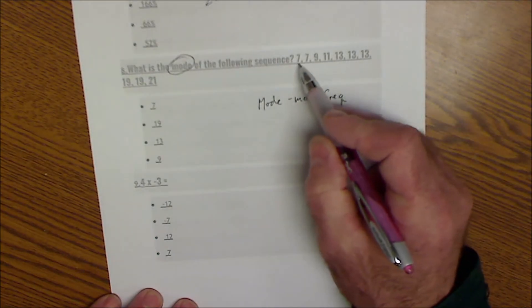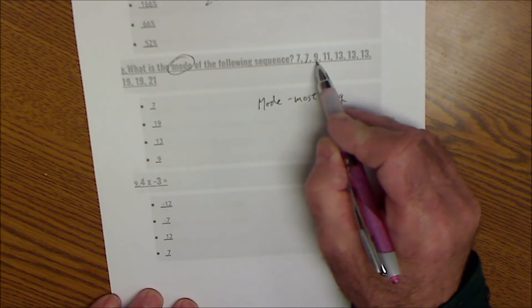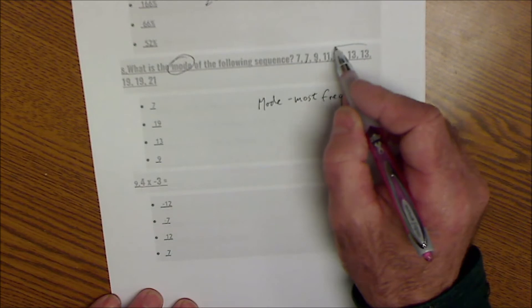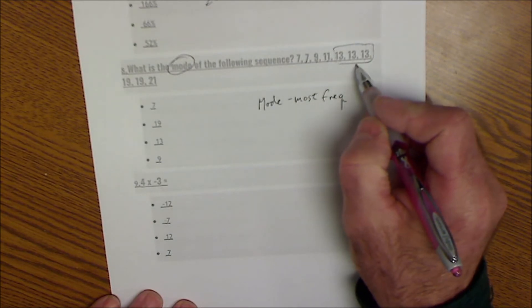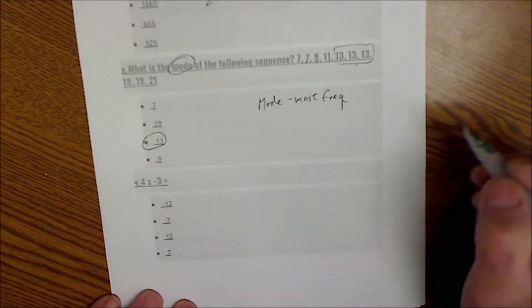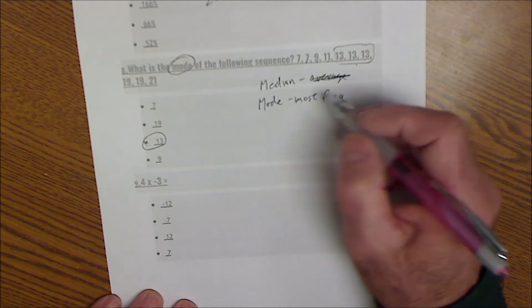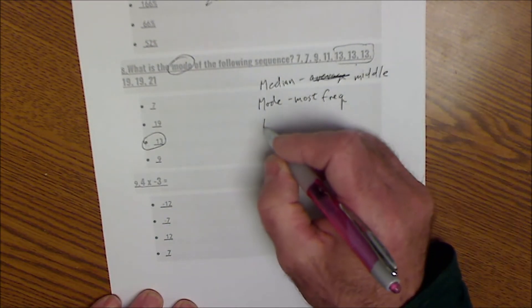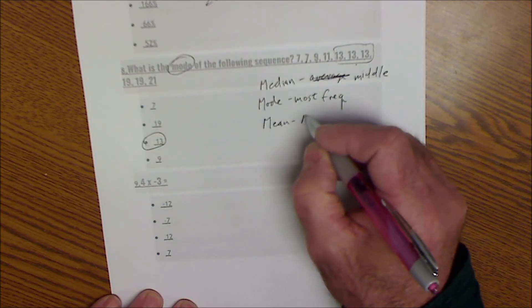Mode means the most frequently used number. So the most frequent, I have one, two values of 7, one value of 9, one value of 11, one, two, three values of 13. I have more 13s than anything else, so that's my answer.